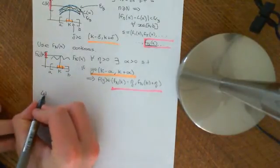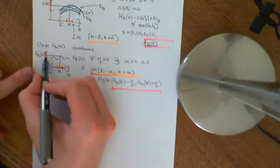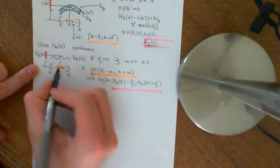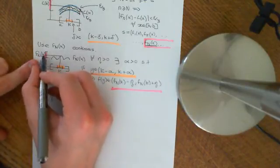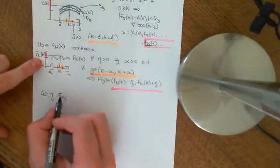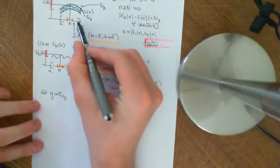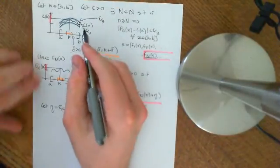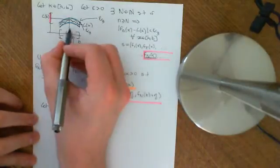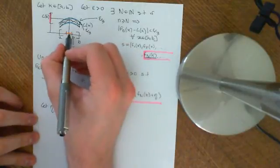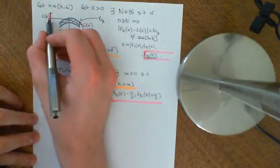So let eta equal epsilon over 3 — which is certainly a number greater than 0. We're going to let this interval go down to epsilon over 3 as well, and I can find you some alpha such that all of the points within that alpha interval around K are mapped into this epsilon over 3 interval around f_N(K). My claim is that I can use delta equal alpha as the original delta needed to prove that L(x) is continuous.